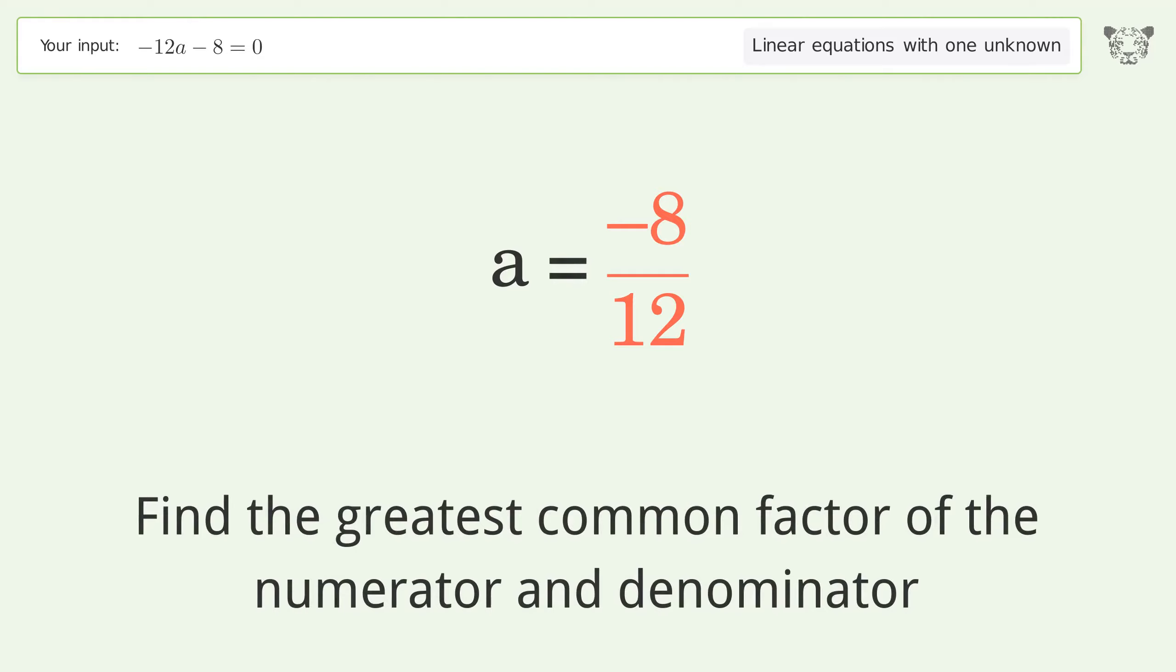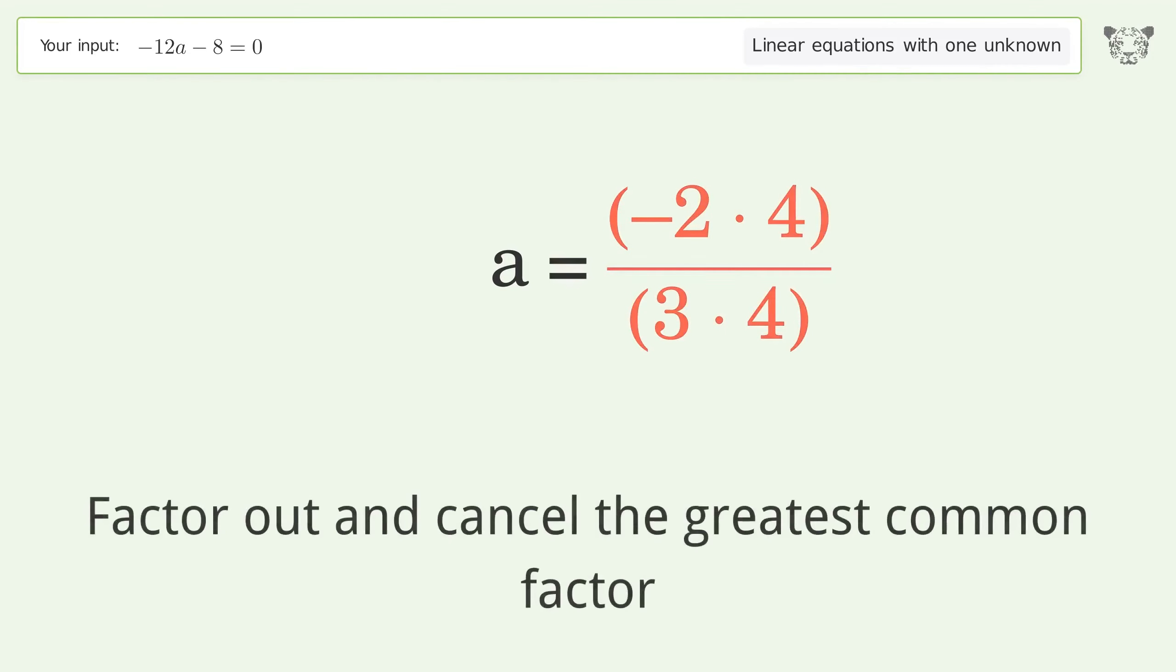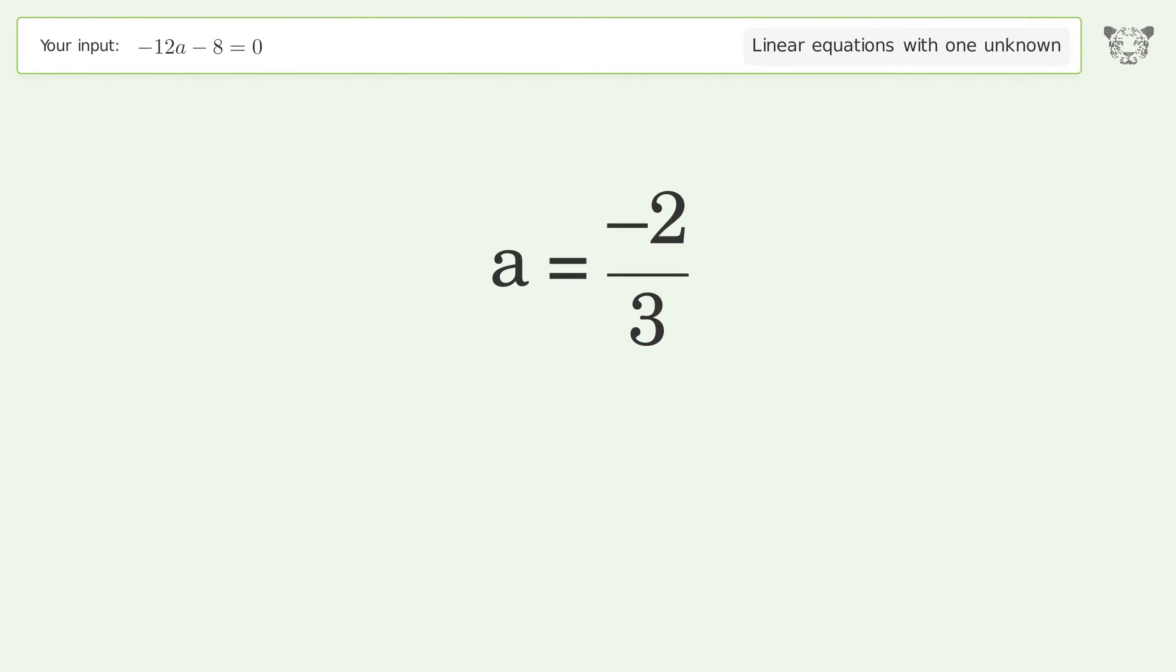Find the greatest common factor of the numerator and denominator. Factor out and cancel the greatest common factor. And so the final result is a equals negative 2 over 3.